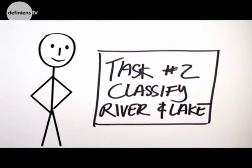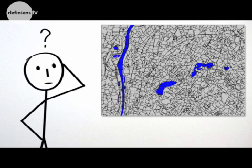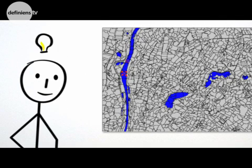Again, think about how we as humans solve this task. The color as such is of no help, so next we look at the shape of the areas. Shape is the key to separating the rivers from the lakes.